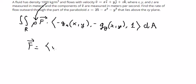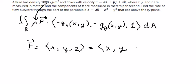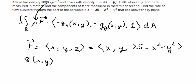We define the surface in terms of x, y, and z. So we have z equal to 25 minus x squared minus y squared. Now let's go to find G(x, y), which is about 25 minus x squared minus y squared.